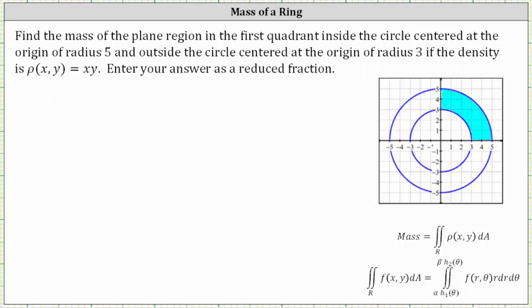We're asked to find the mass of the plane region in the first quadrant inside the circle centered at the origin with a radius of five and outside the circle centered at the origin of radius three, if the density function is rho of x comma y equals xy.